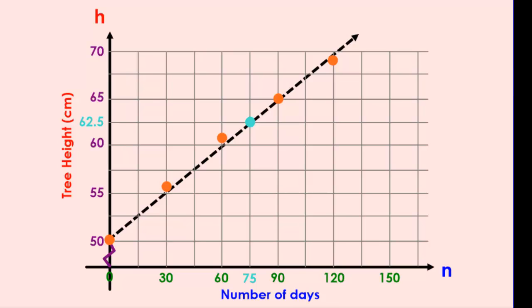Graphs can also be used to predict things that fall outside of our range or beyond where our points are. If we continued up the line, we could predict things by extrapolating.